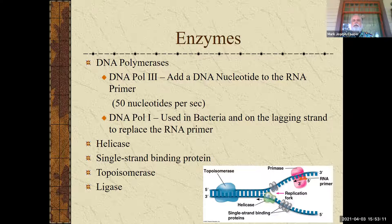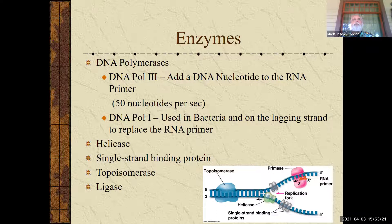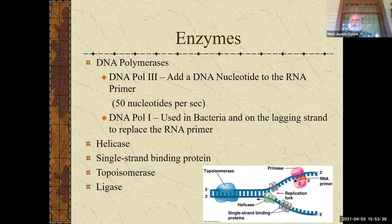DNA polymerase I is used in bacteria — that's why it was first discovered in bacteria, and that's why it's called number one. On the lagging strand, it replaces the RNA primer. What has to happen is, on the lagging strand — and even on the leading strand — we have these primers that are sticking there and they can't be used, so they need to be removed. DNA polymerase I goes back in, takes out the pieces of RNA, and replaces them with DNA.